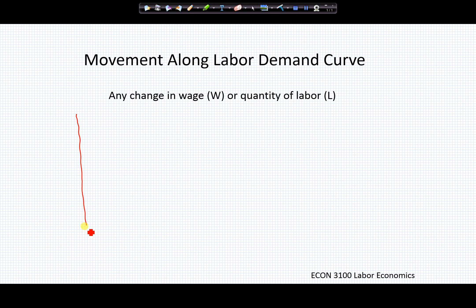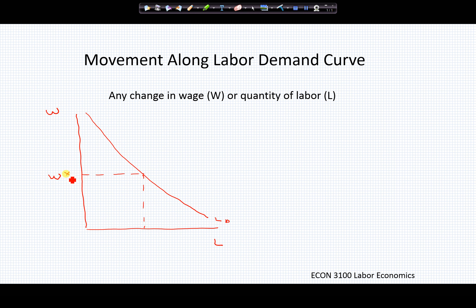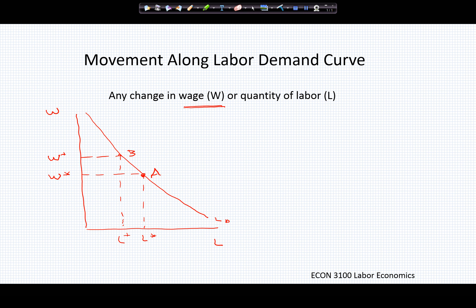Let's consider our labor demand relation with labor units and wage — a downward sloping labor demand curve. If we have W star and L star, and the wage changes from W star to W plus, then that would simply yield a movement from point A to point B on this demand curve. A change in one of the two variables that helps define this curve will simply move us along the curve.